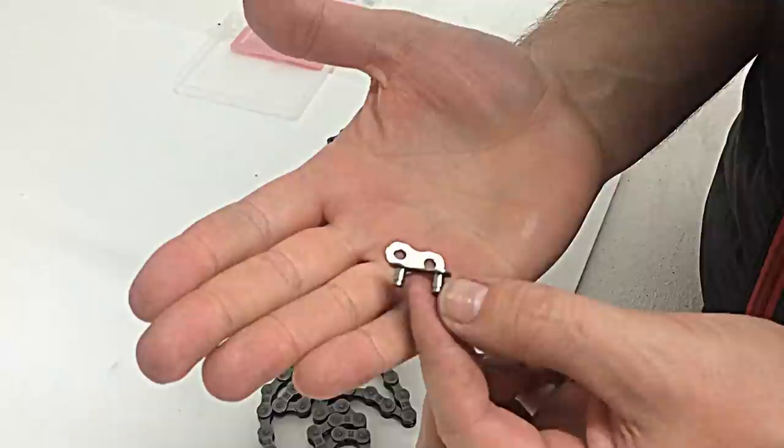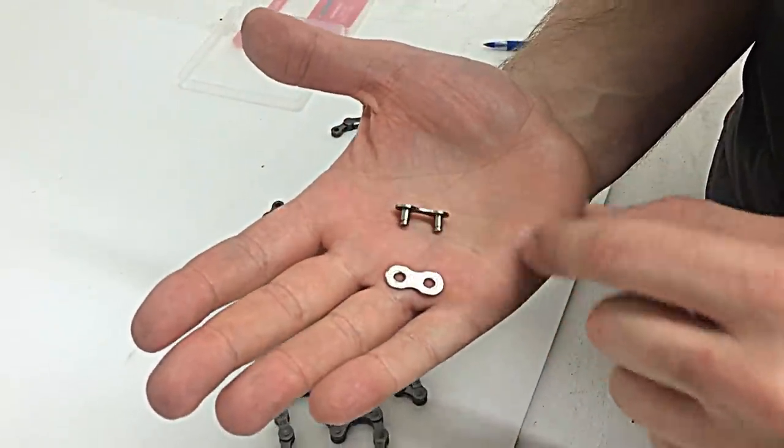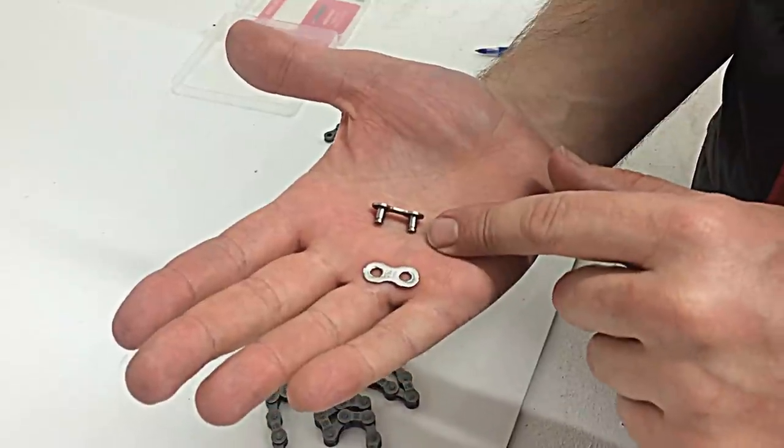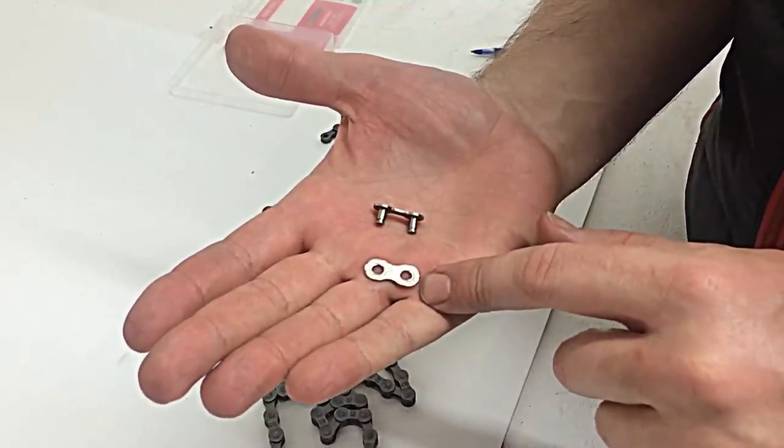Ok, so we've got the Contrast 7 and 8 speed chain quicklink. I'm just going to show you quickly how to install it because it's slightly different to most where it has the two pins on the plate rather than just the one, and then just the blanking plate on the front.